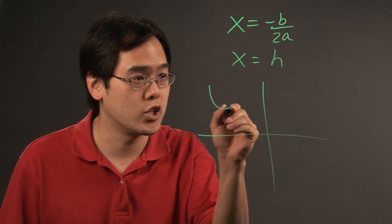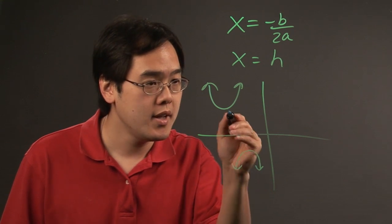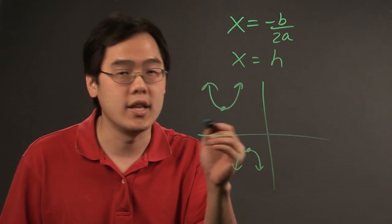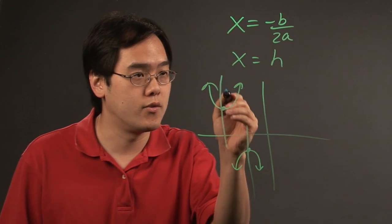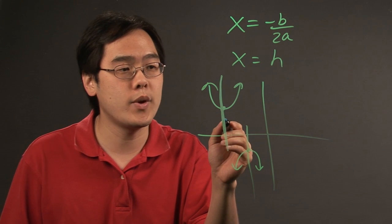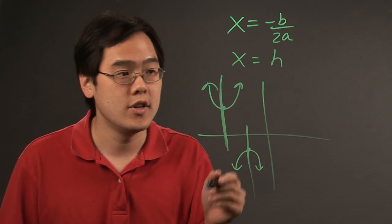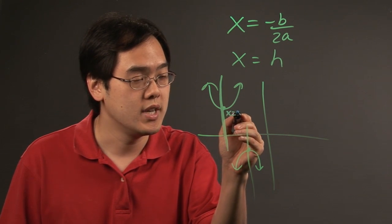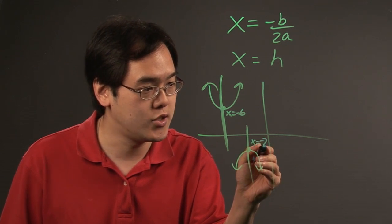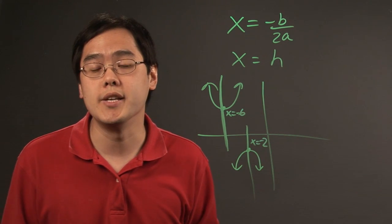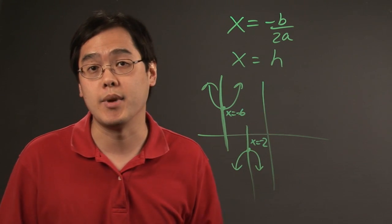So for example, whether you have a vertex that looks like this, or a vertex that looks like this — the vertex is on the left side of the x-axis, and when you draw the axis of symmetry, you have a situation where the x-coordinate of the vertex is going to be negative. So in this case, you could have x is equal to negative 6, and here the axis of symmetry can be x is equal to negative 2, for example.